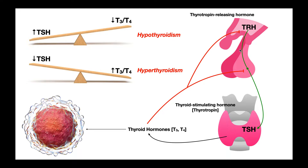There's a structure that dangles off of the hypothalamus inferiorly — this whole structure is called the pituitary. The darker structure is the posterior pituitary, and the brighter pink one is the anterior pituitary, also called the adenohypophysis. The hypothalamus manufactures a hormone called TRH, which stands for thyrotropin-releasing hormone. Between the hypothalamus and the anterior pituitary there's a network of blood vessels, and TRH travels down that network to reach the anterior pituitary.